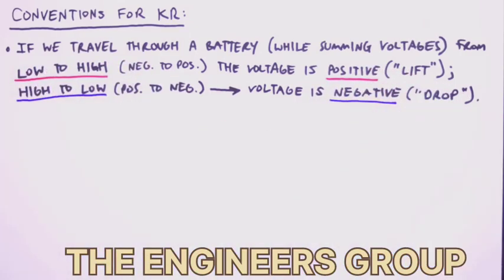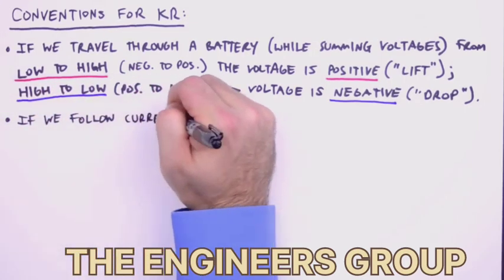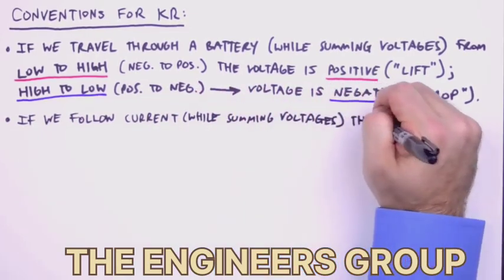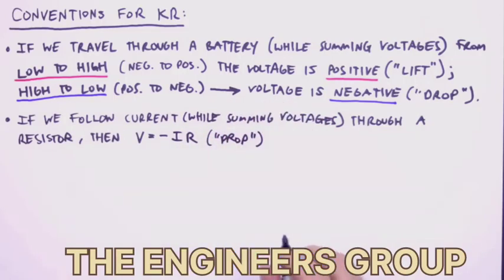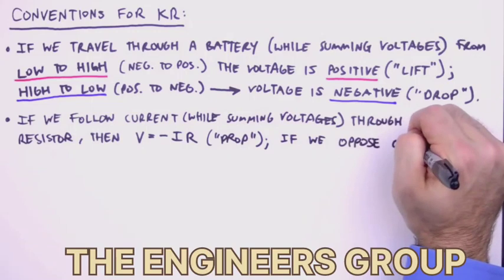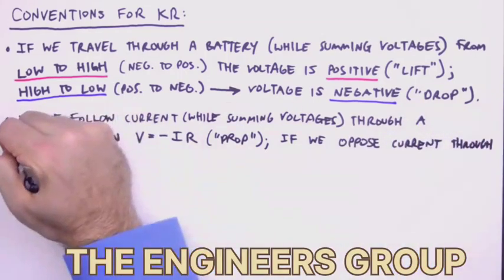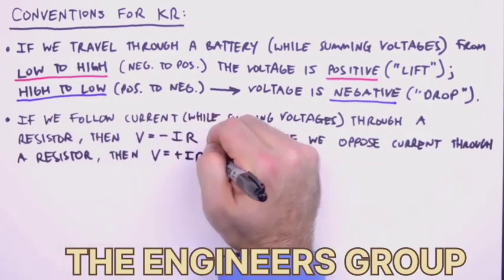It turns out that the sign of the voltage across a resistor also depends on the direction of our labeled current. So if we follow a current while summing voltages through a resistor, then the voltage across the resistor is negative V, or invoking Ohm's law negative I times R. If instead we oppose the direction of the labeled current as we pass through the resistor, then the voltage across the resistor is treated as positive I times R.